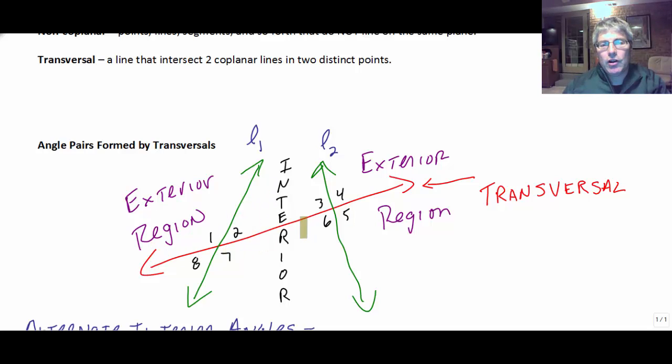And then when the transversal cuts those two lines, we end up with each time these four different angles. And I've numbered the angles one, two, and then over here we've got three and four, five and six, and seven and eight. So when we intersect line one, we get angles one, two, seven, and eight. And when the transversal intersects line two, we get angles three, four, five, and six.